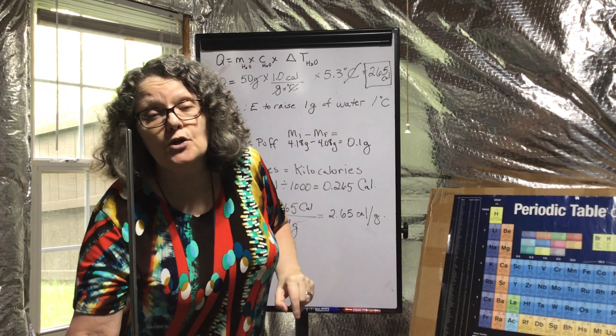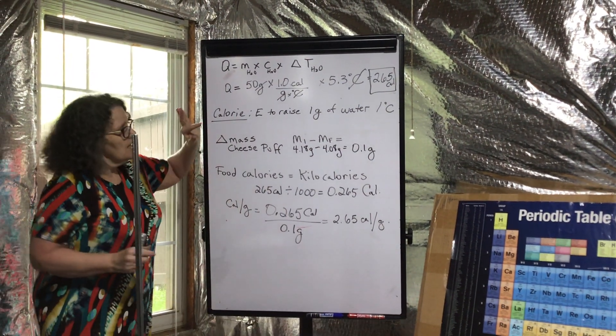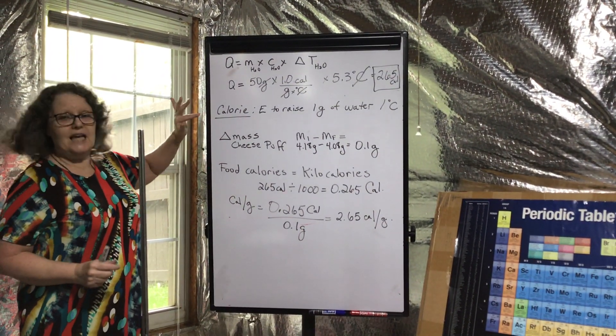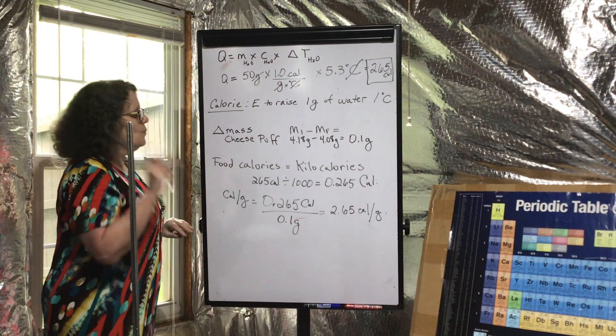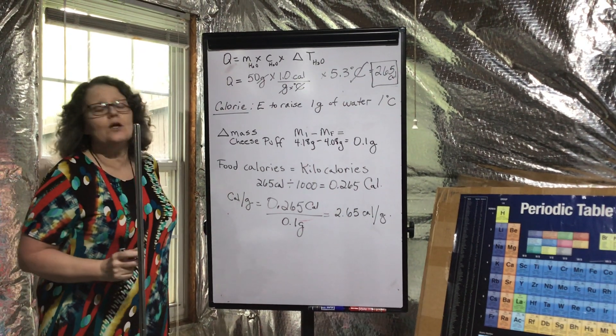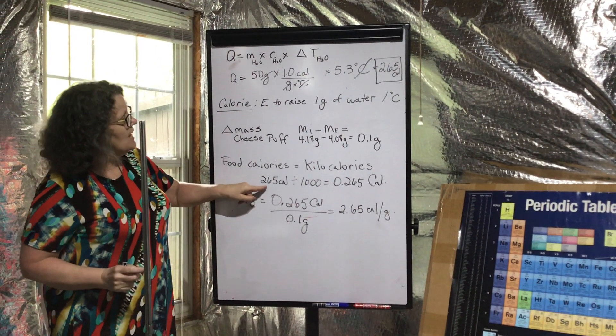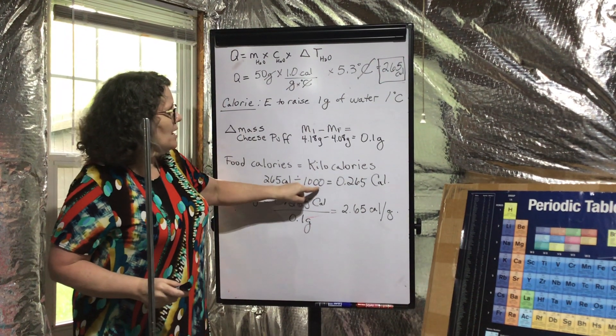Before we can figure out the calories per gram for this cheese puff, we have to understand something: food calories are actually kilocalories. We have to take 265 calories and divide it by a thousand - that's food calories.